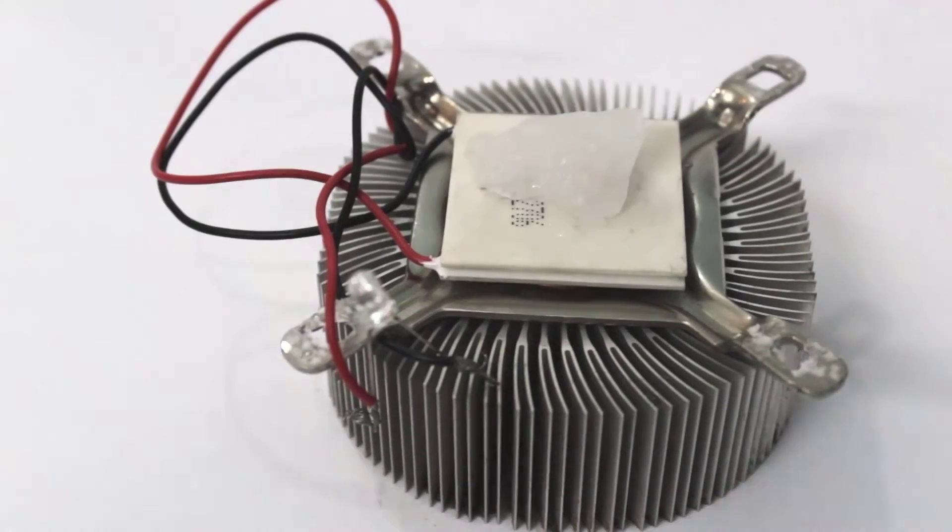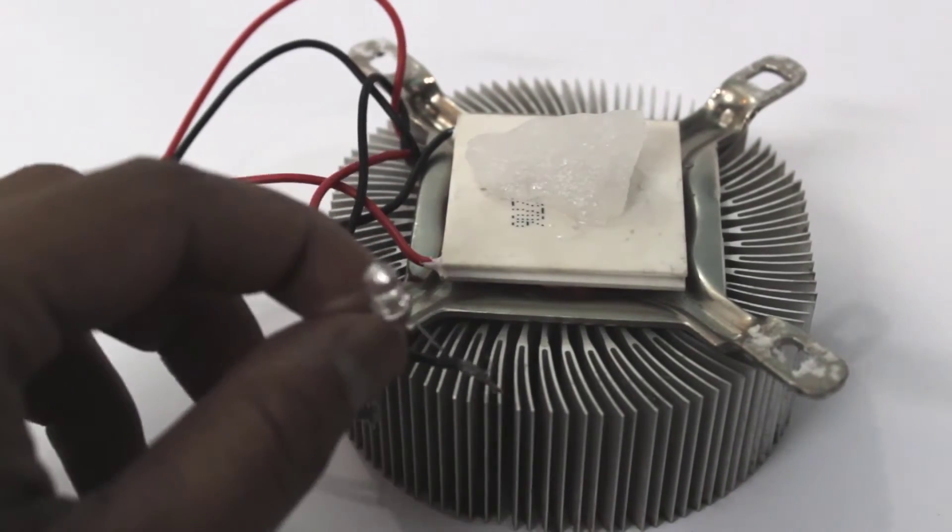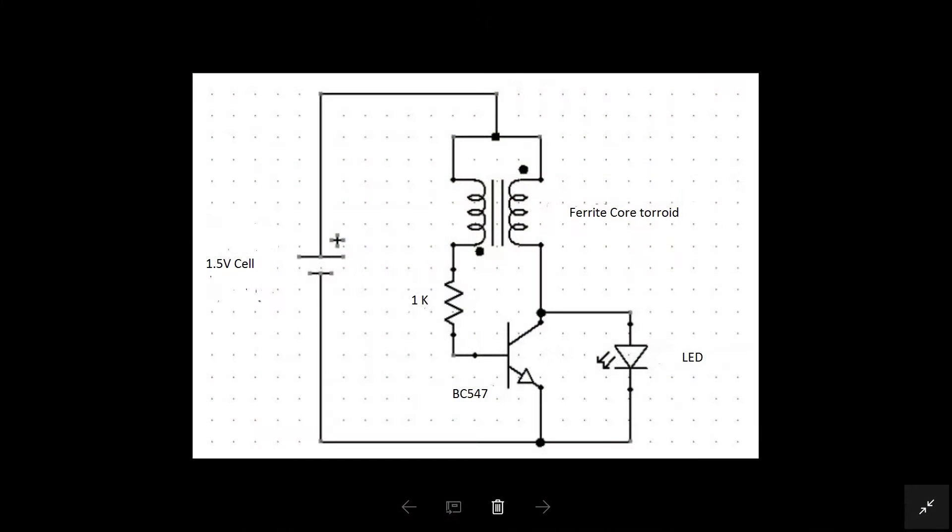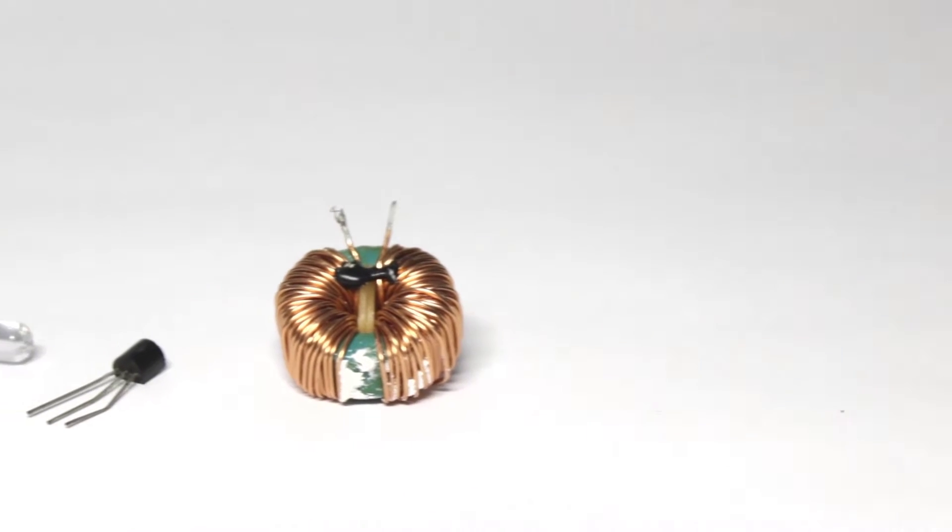If you use a Peltier module with an ice cube to light up an LED, it won't work because the voltage is not sufficient. So I will be using a joule thief circuit to light up an LED from the cell or Peltier module.